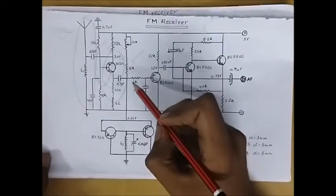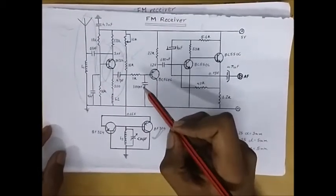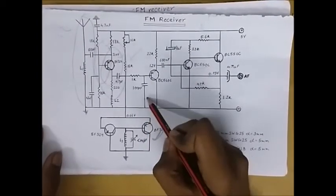Mixer receives the signal from the two inputs, the RF amplifier and the local oscillator controlled by the user, and provides sum and difference of the frequencies to the IF stage.